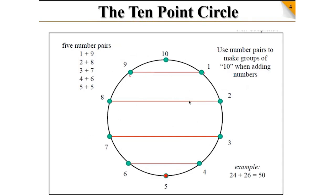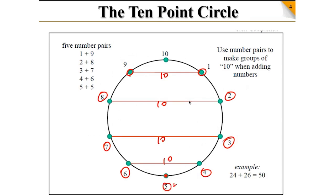What is 1 plus 9? 10. What is 8 plus 2? 10. What is 7 plus 3? 10. What is 6 plus 4? 10. And what is 5 plus 5? 10. Good — in all these numbers we are getting 10. So we have to keep in mind these are called number pairs.